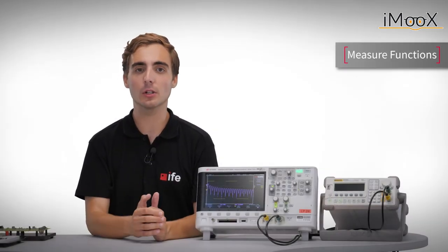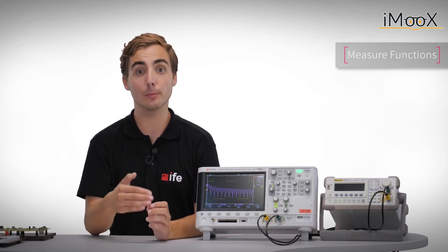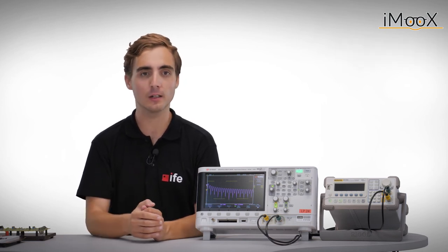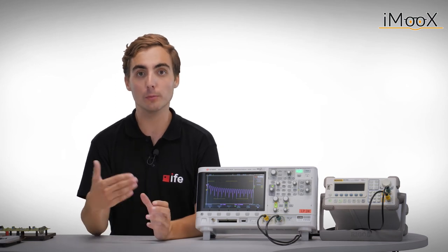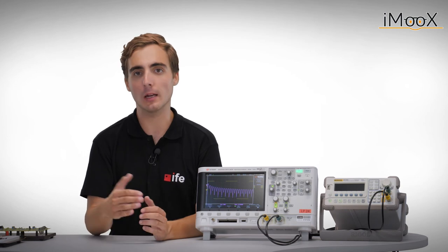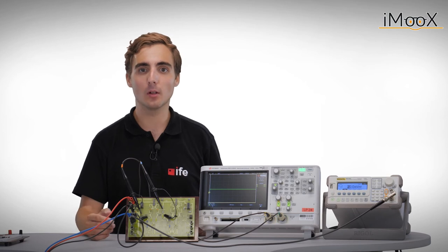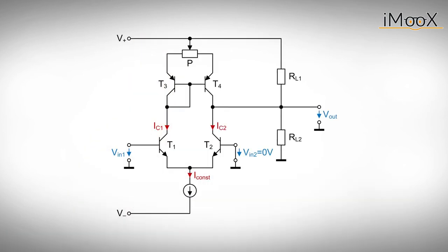Another nice feature of modern scopes are the so-called measure functions. Obviously, they can be used to measure different signal characteristics, such as peak-to-peak voltages, root-mean-square voltages, periods and frequencies, and many more. Let us continue with another example. We use a bipolar transistor differential amplifier and would like to measure the differential gain. Therefore, we set the negative input to ground and apply a small sinusoidal signal on the positive input.